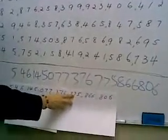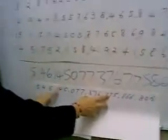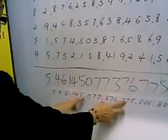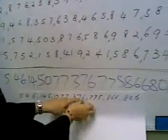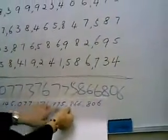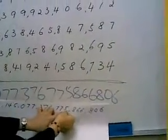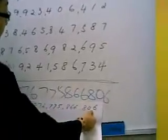So the answer is 5, 4, 6, 1, 4, 5, 0, 7, 3, 7, 6, 7, 5, 8, 6, 8, 0, 6.